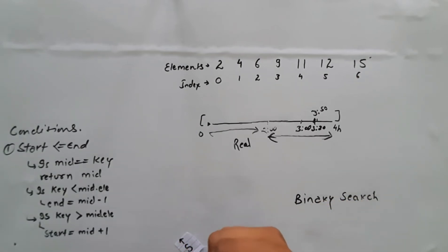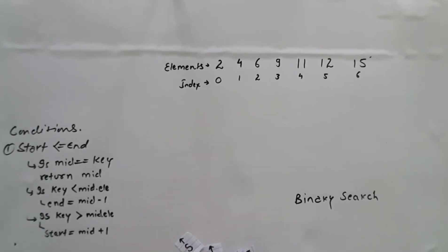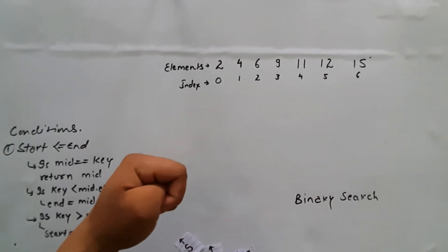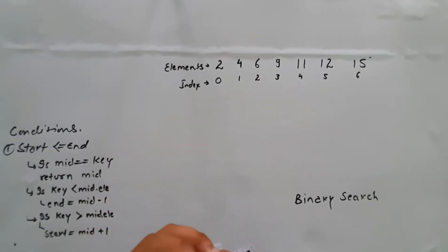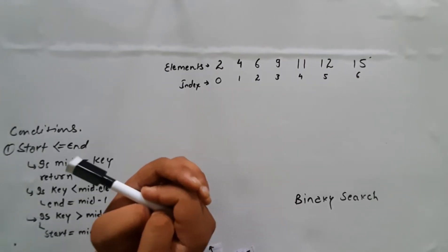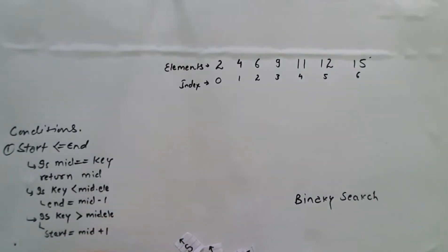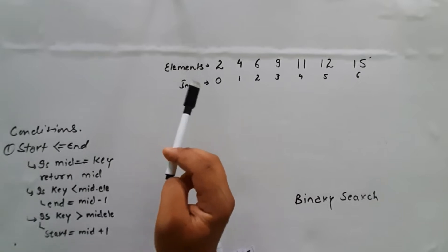So that was the real life example. Now let's see how binary search works on an array. The example I just gave, I heard it somewhere and thought it was a pretty cool example to include. Now let's jump to the array part of it. So first thing you should keep in mind: binary search works on a sorted array — either in ascending order or in descending order. Right now we have an array in ascending order.